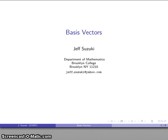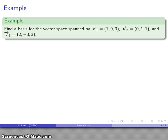Let's find a basis for a vector space spanned by some set of vectors. For example, let's say I want to find the basis for the vector space spanned by vector 1 equals (1, 0, 3), vector 2 equals (0, 1, 1), and vector 3 equals (2, -3, 3). So I have three vectors, and I want to find the basis of the vector space spanned by these three vectors.